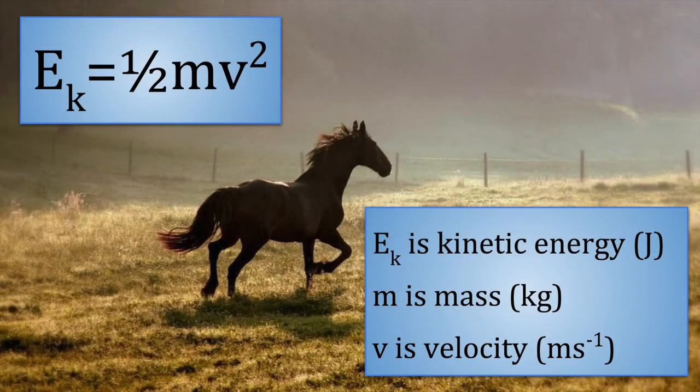The energy a body has because it is moving depends on its mass and its velocity. Using this formula, kinetic energy is half m times v squared. The unit of energy and of work is the joule.